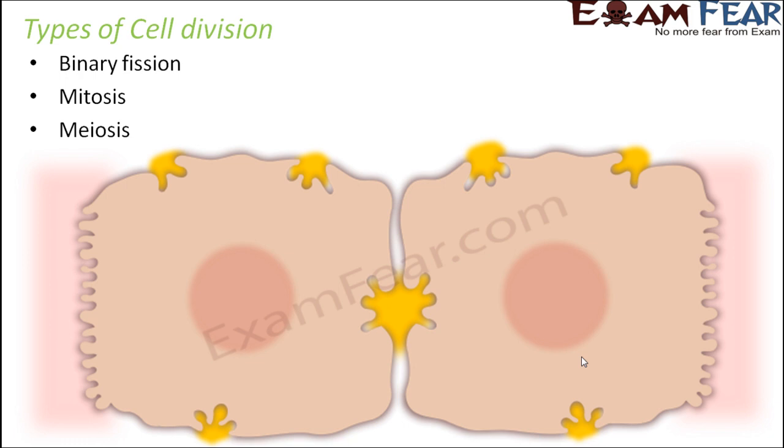Again, for eukaryotes, you have different types of cell division. So when we talk about prokaryotes, for example bacteria, they generally divide by the process of binary fission. So this is for prokaryotes like bacteria.